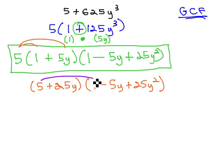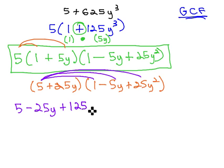Now, distributing the 5 all the way through, 5 times 1 is 5, minus 25y, plus 5 times 25 is 125y squared.